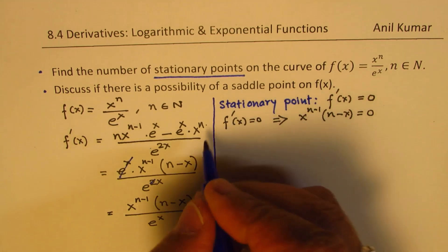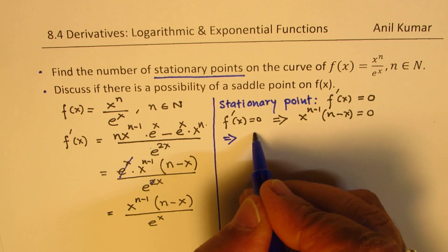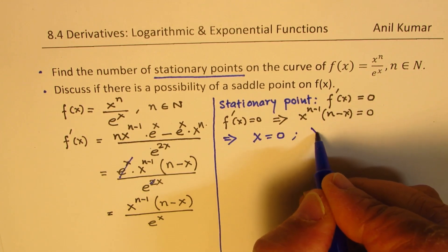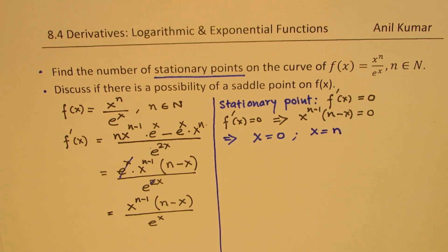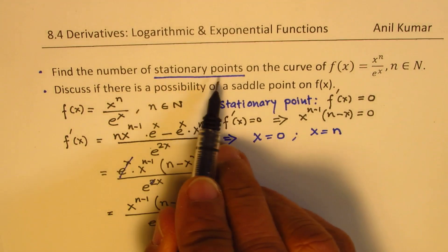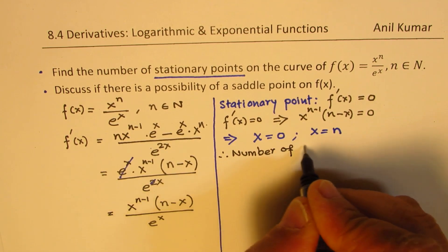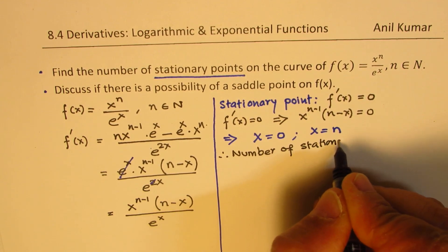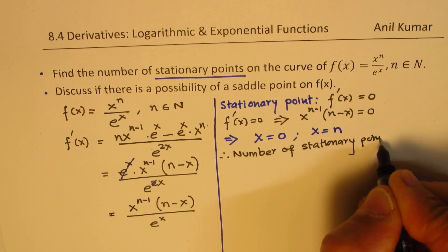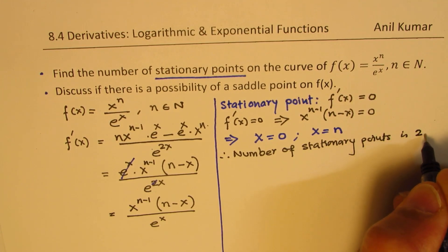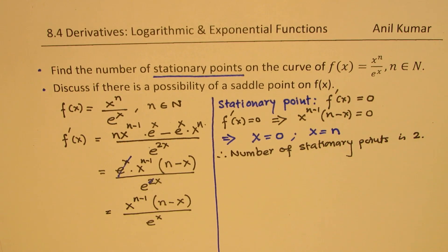From x^(n−1) · (n − x) = 0, we have two points: one is x = 0, and the other is x = n. So we conclude that we have two stationary points. Therefore, the number of stationary points is 2 — one at x = 0 and the other at x = n. So that part is answered.